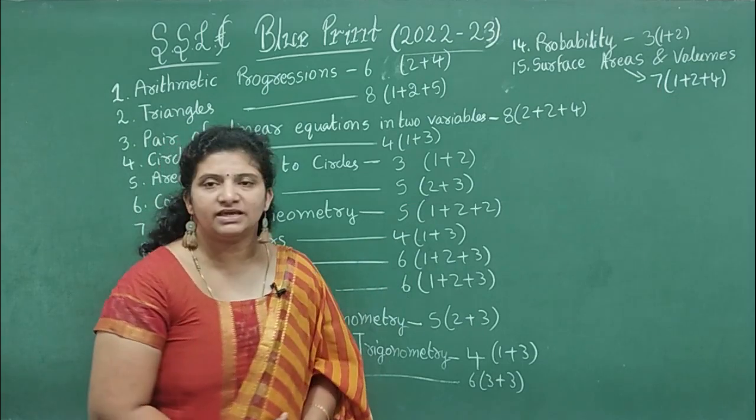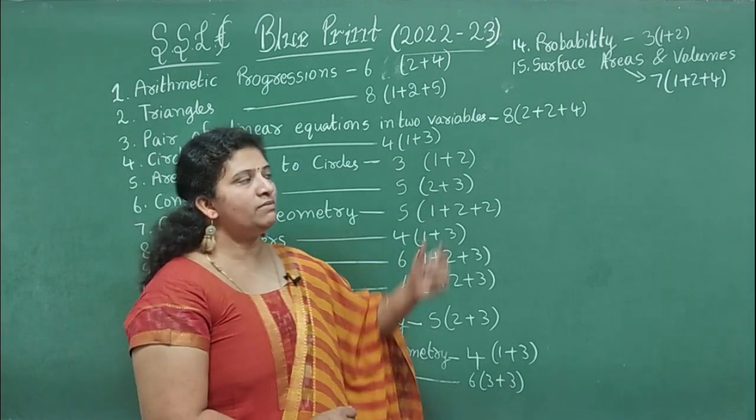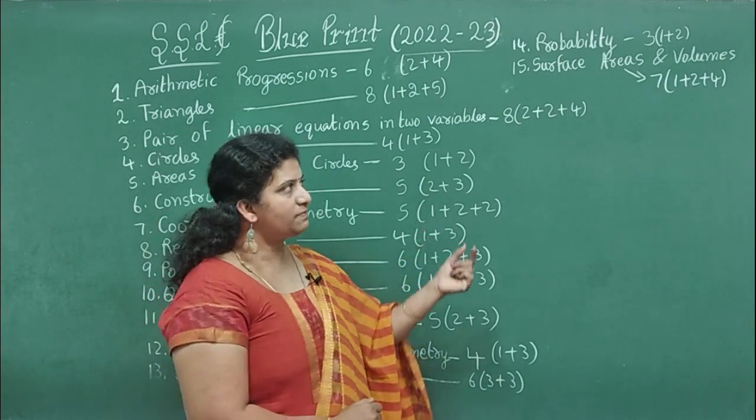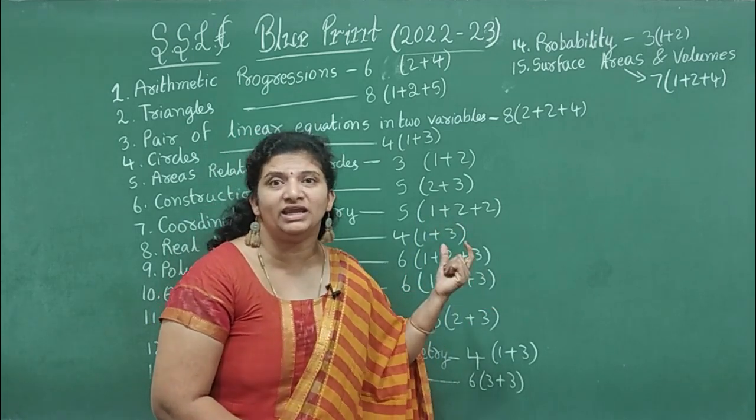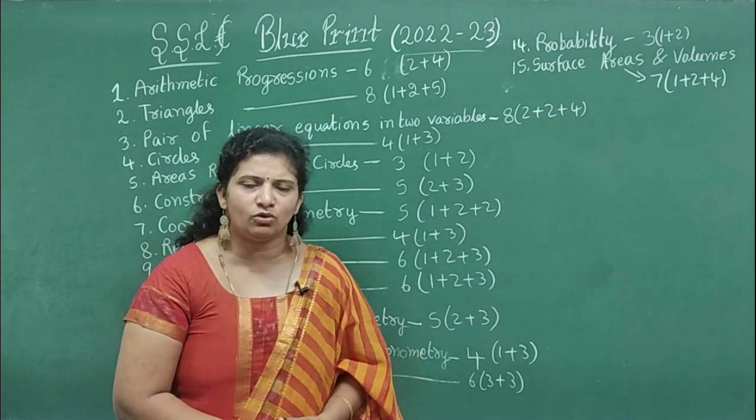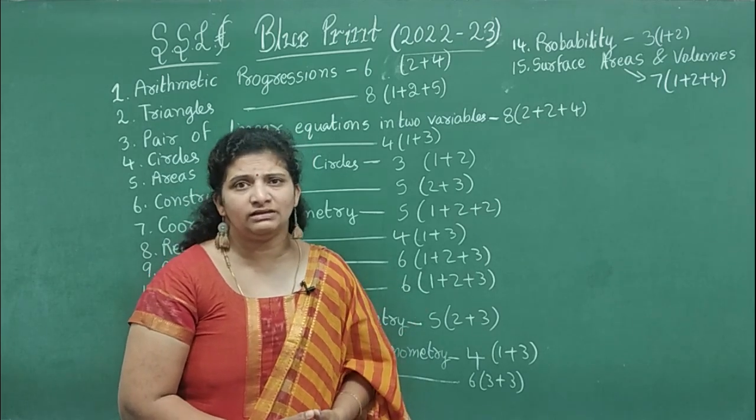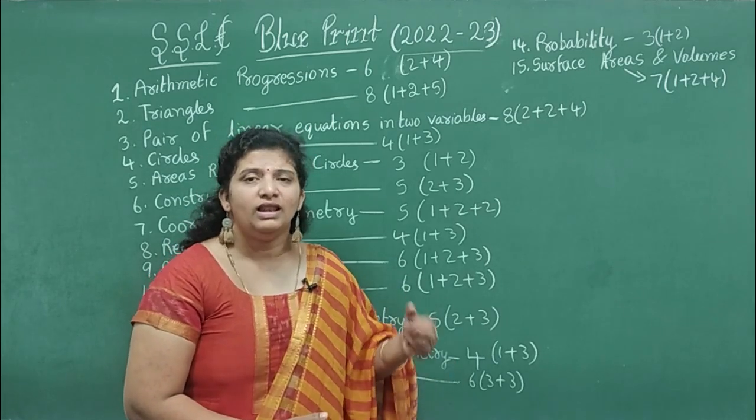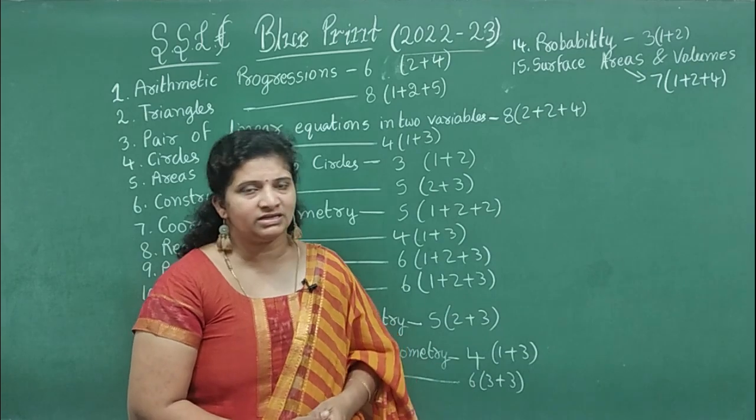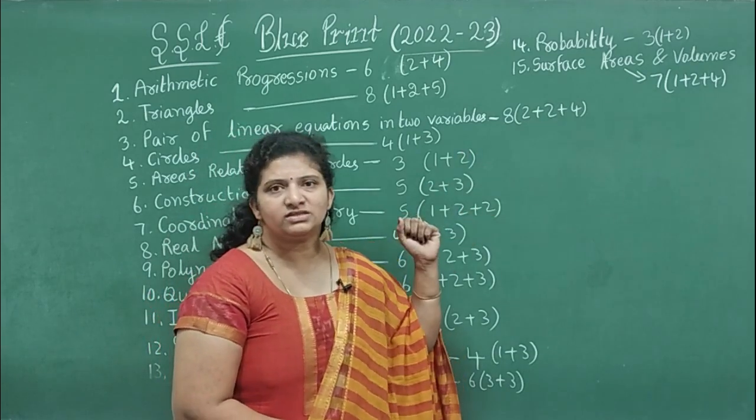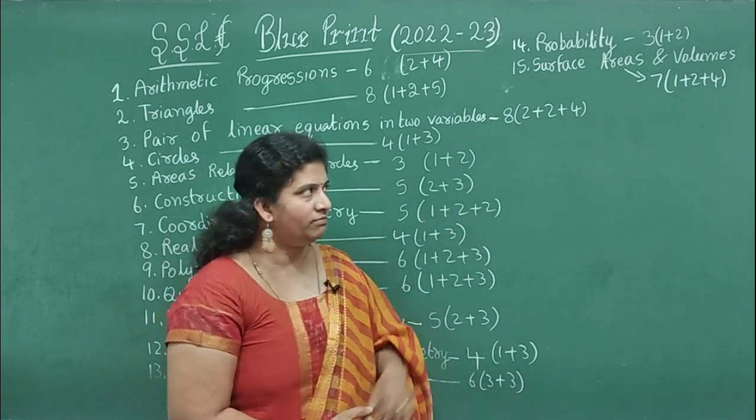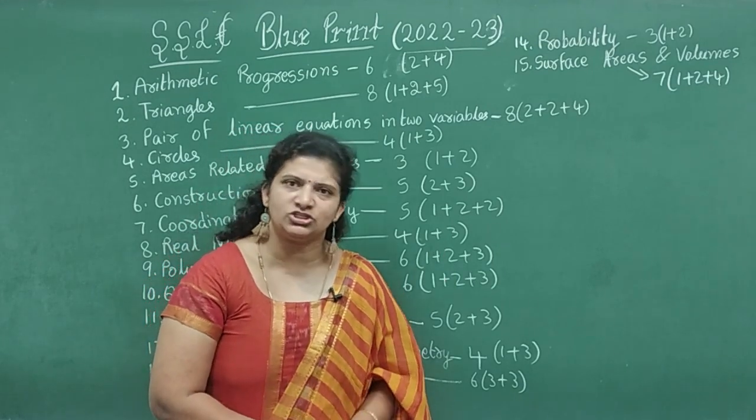Fifteenth chapter, Surface Areas and Volumes - 7 marks weightage. We can expect 1 mark formula-oriented question: what is CSA of a cone, CSA of a cylinder, CSA of a sphere, like this. Two marks and two marks - one formula-oriented problem. Four marks we can expect some application problem in this chapter.